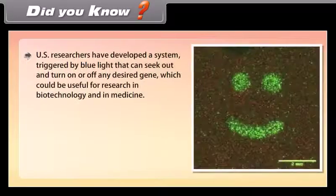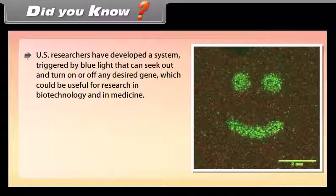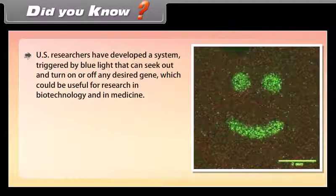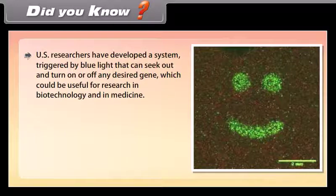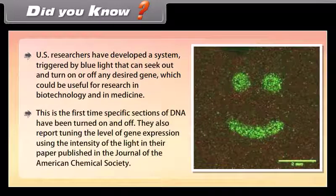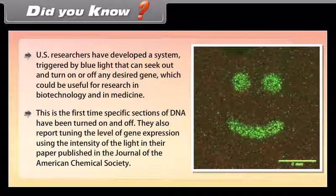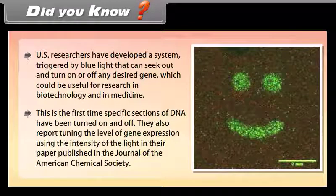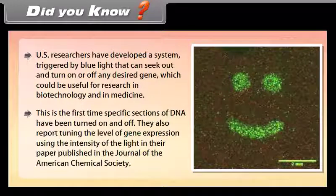Did you know? U.S. researchers have developed a system triggered by blue light that can seek out and turn on or off any desired gene, which could be useful for research in biotechnology and medicine. This is the first time specific sections of DNA have been turned on and off. They also report tuning the level of gene expression using the intensity of the light, published in the Journal of the American Chemical Society.